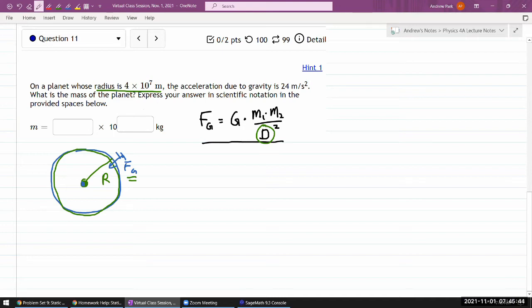It says the acceleration due to gravity is some value g, and it's asking what is the mass of the planet. We've expressed the gravity in two different ways - this is what we're learning in chapter 13 - and we've also used this expression: gravitational force is equal to mass times g. So you have to compare these two expressions together which are equivalent.